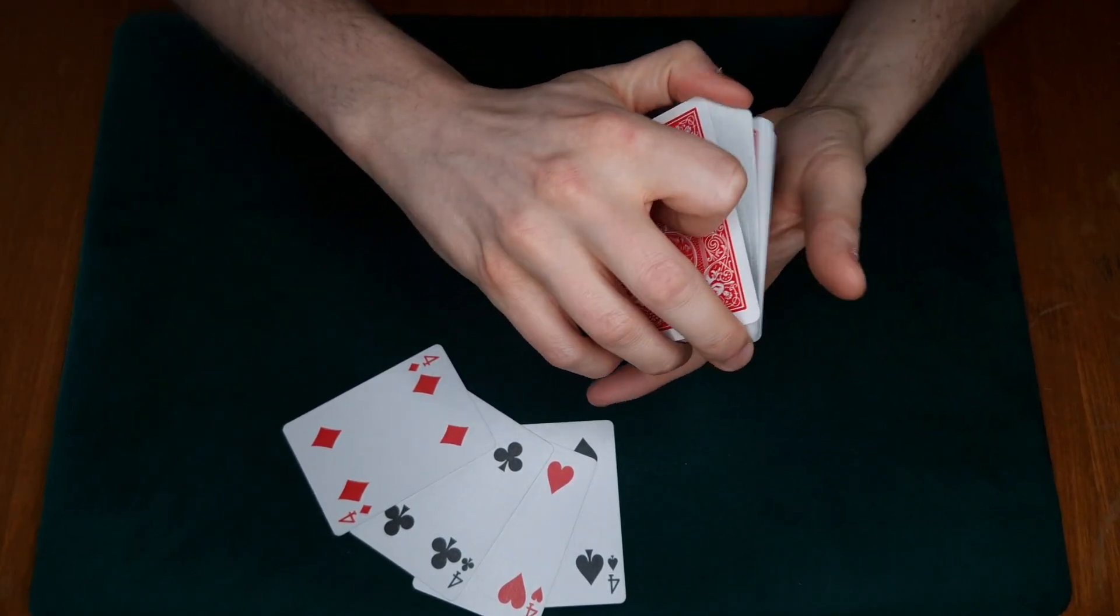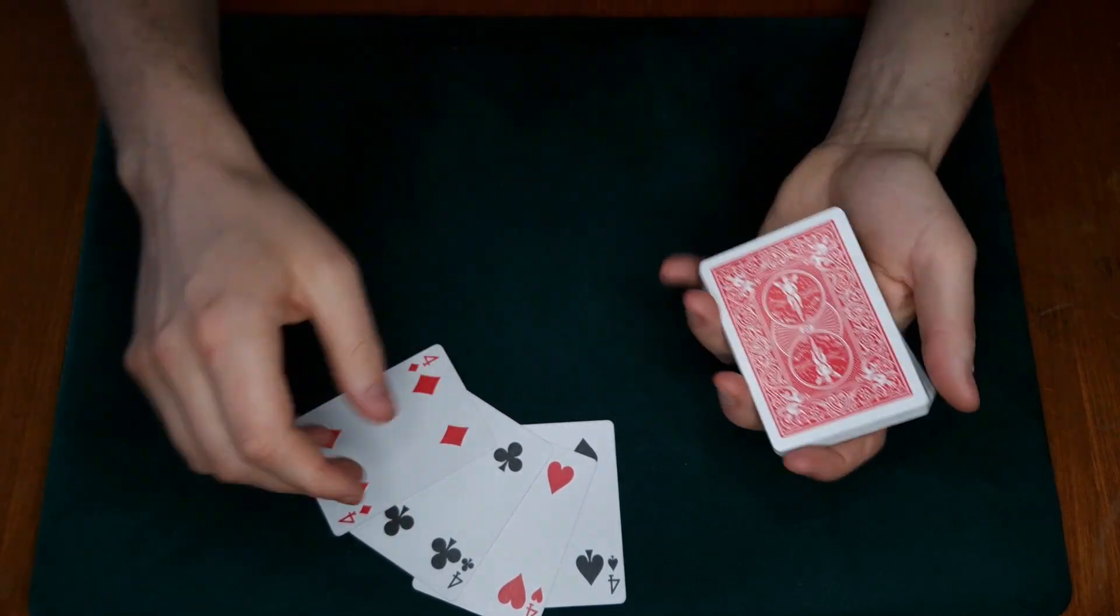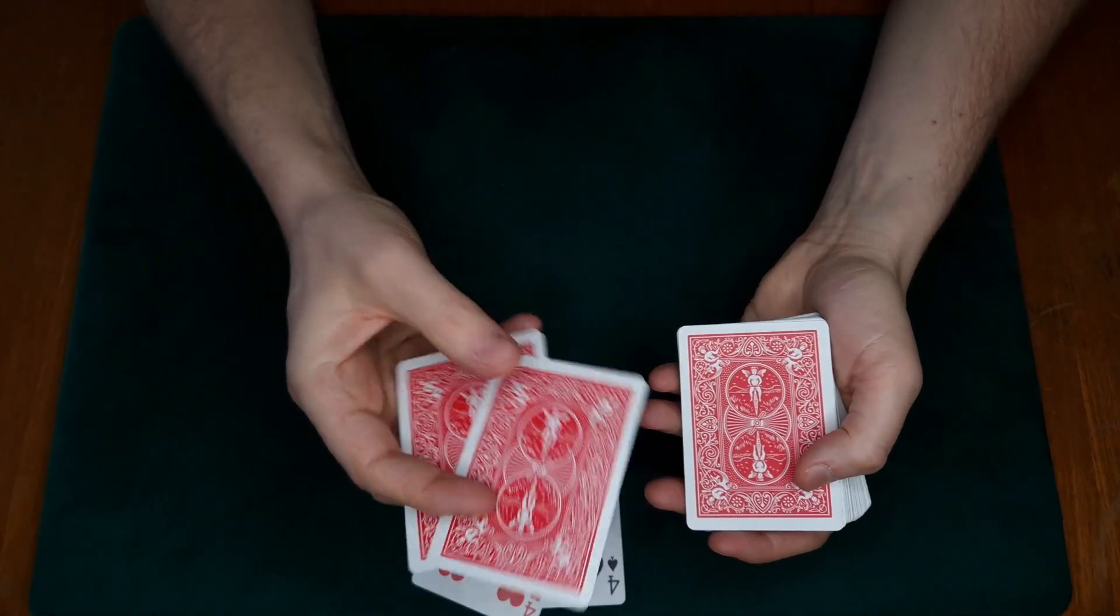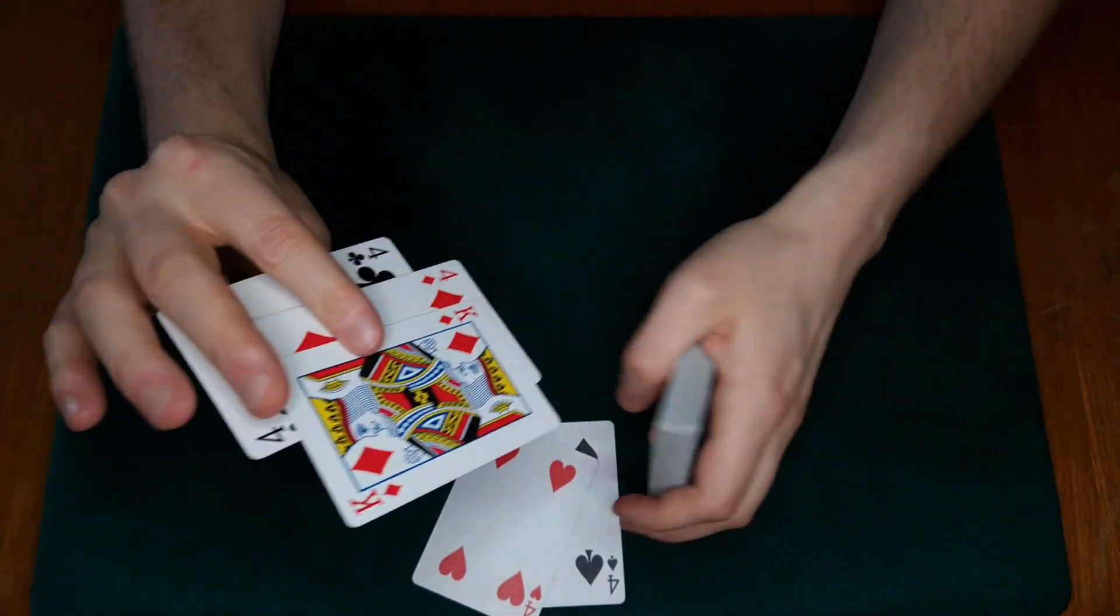What we're going to do is we're going to have two of the fours right here on top, then we're going to have an indifferent card - it doesn't matter, in this case it's the King of Diamonds - and another four.